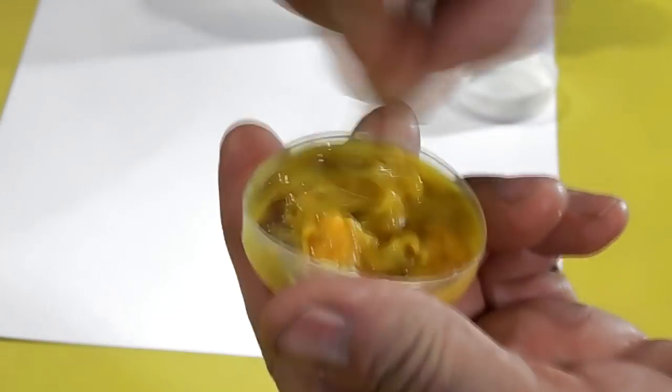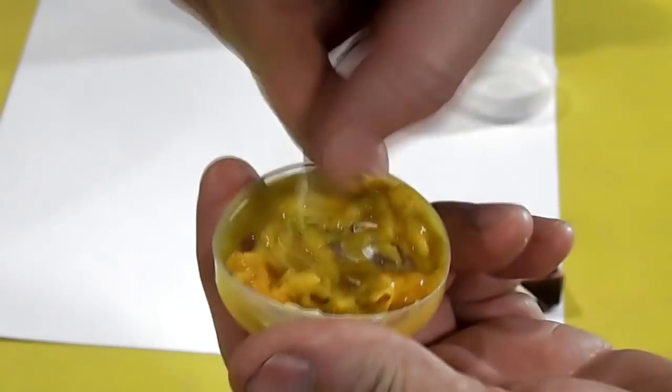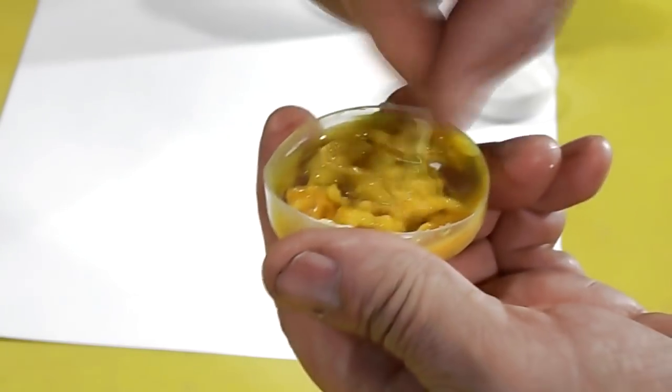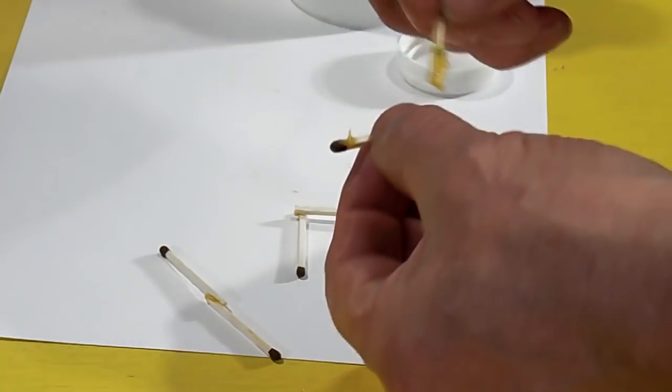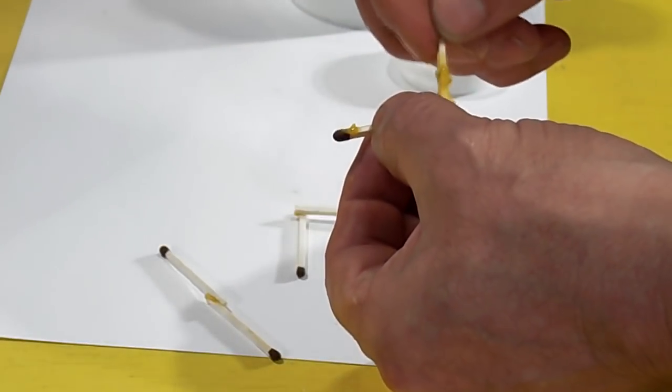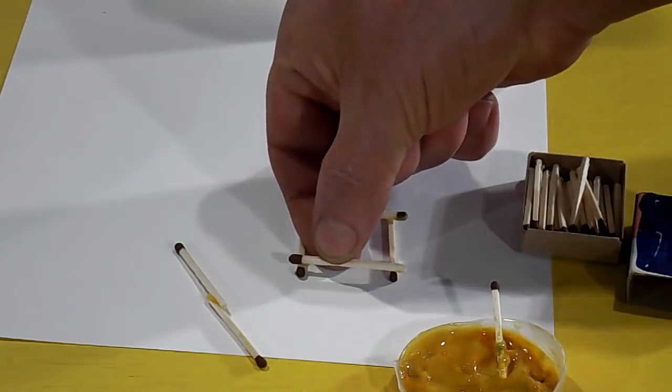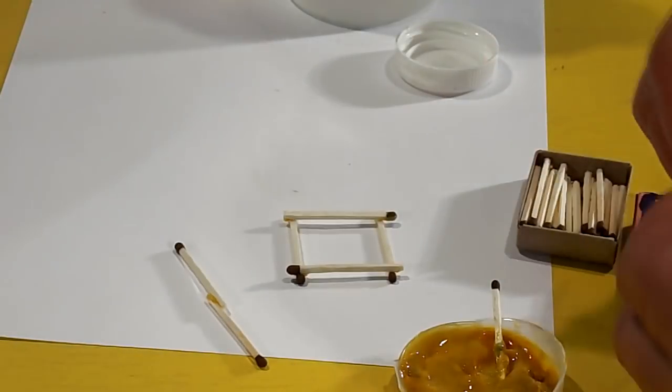Now I need to mix the glue well to get a uniform consistency. Now I need to test the glue. I started to try to glue the house of matches. The thick consistency glue holds matches well in place.